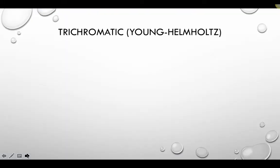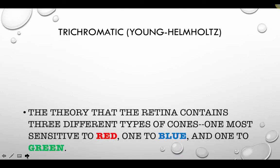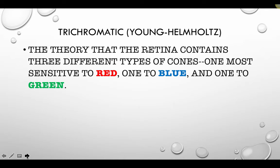We're going to talk about trichromatic theory first — sometimes referred to as the Young-Helmholtz theory of color vision. Trichromatic means three-color theory, and it attempts to explain color visual processing as beginning in the retina, in the layer of rods and cones. This theory suggests that the retina contains three different types of cones: some most sensitive to long wavelengths or red, some to short wavelengths or blue, and some to medium wavelengths or green.